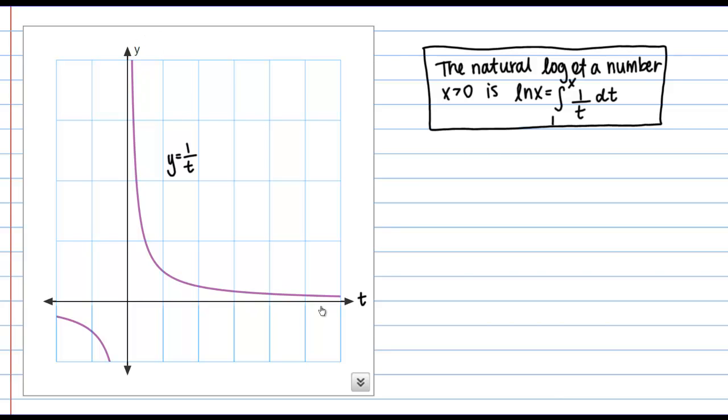So this is our function, y equals 1 over t, or at least part of that function. And over here, once again, I've just written our definition. The natural log of a number x greater than 0 is ln(x) equals the definite integral from 1 to x of 1 over t dt.